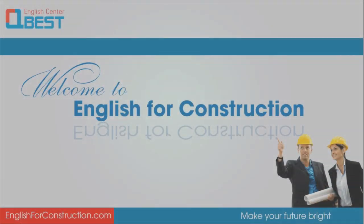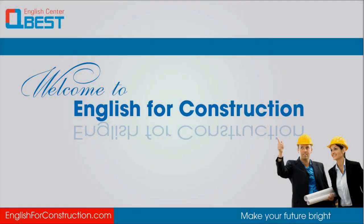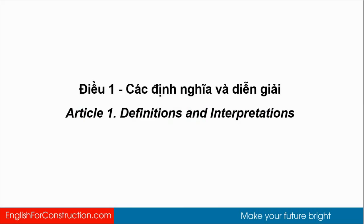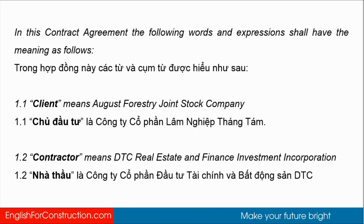Hello and welcome back to English for Construction. Let's continue Article 1: Definitions and Interpretations. In this contract agreement, the following words and expressions shall have the meaning as follows. 1.1 Client means August Forestry Choice Stock Company. 1.2 Contractor means DTC Real Estate and Finance Investment Corporation.